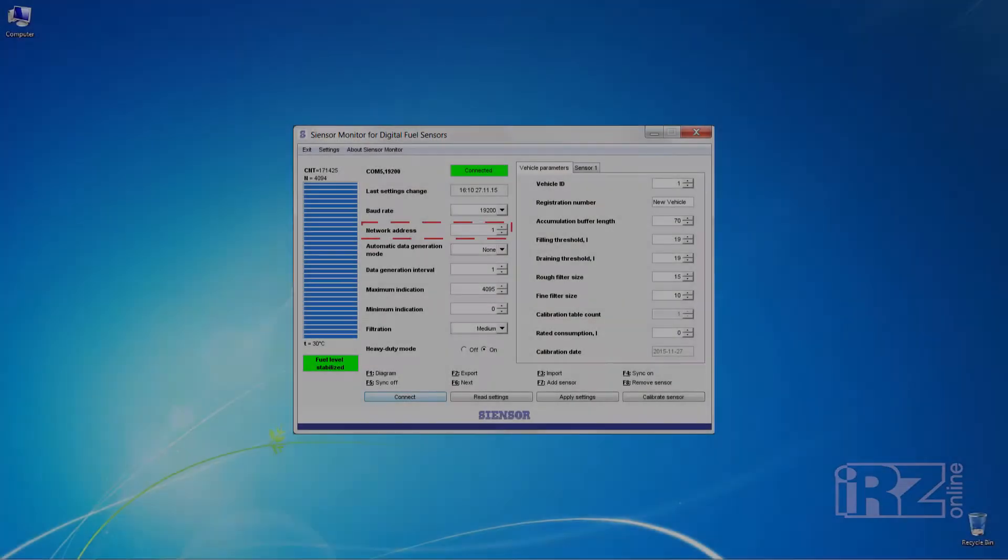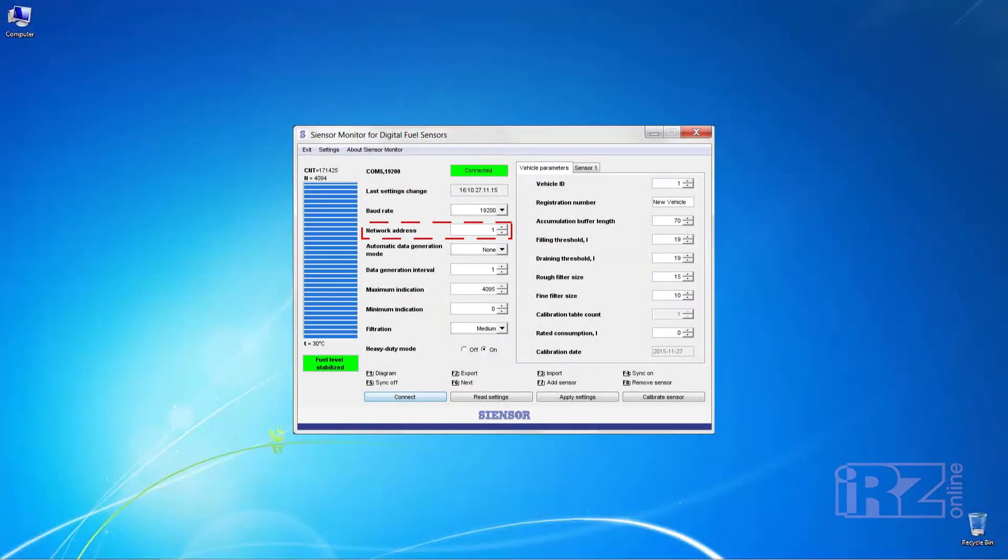If the terminal is connected with only one sensor, put one in the main window in the program field network address. If there are some sensors, then every sensor should have a unique network address. In the mode no distribution, sensor outputs data requested by the terminal. In the binary and character mode, data is transmitted automatically by a specified interval, which can be configured in the field below. If required, you can change the discretization by setting its minimum and maximum value.